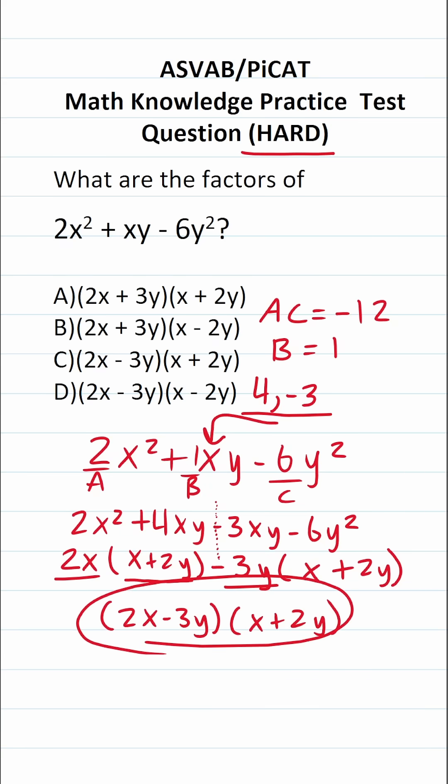And that is how you factor by grouping. The answer to this one is 2x minus 3y times x plus 2y, which, as you can see, is answer choice C.